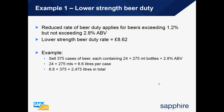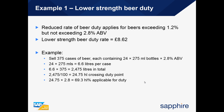6.6 litres times 375 cases equals a total of 2,475 litres. We then convert those 2,475 litres into hectolitres to find how many hectolitres will be crossing the duty point: 2,475 divided by 100 gives 24.75 hectolitres. We multiply 24.75 by 2.8 because the pale ale is 2.8% ABV, giving a figure of 69.3 hectolitres as a percentage applicable for duty to be paid to HMRC.